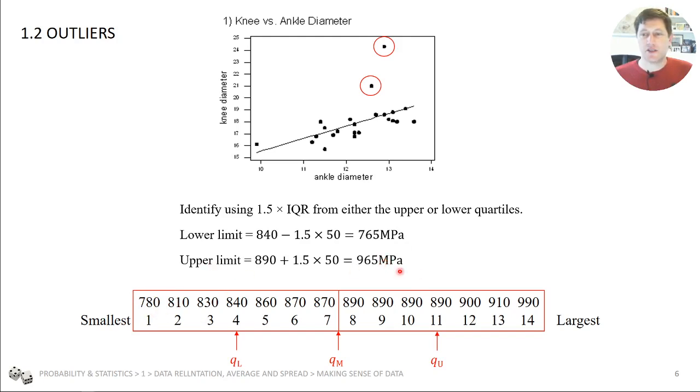However, the upper limit, 965 Pascals, this data point here would be an outlier. So, it's highlighted as a data point that might be an anomaly.